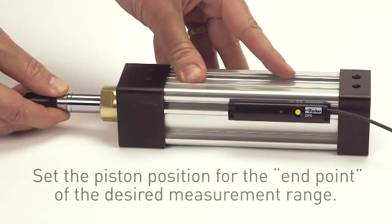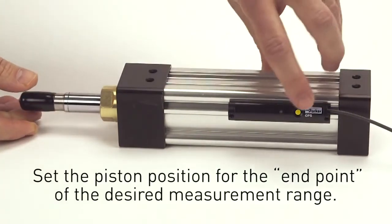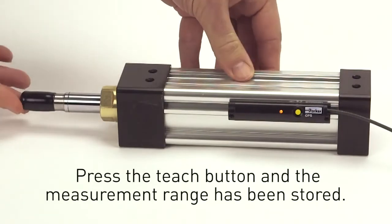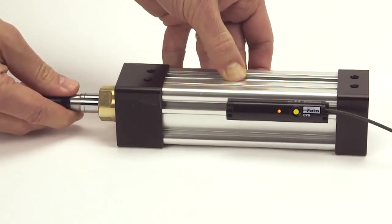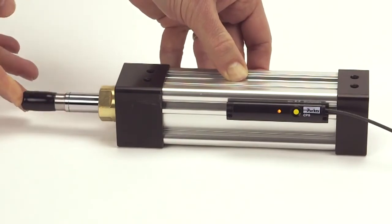Next, set the piston position for the endpoint of the desired measurement range. Press the teach button and the measurement range has been stored. The analog signal or IO link process data is now configured to this range.